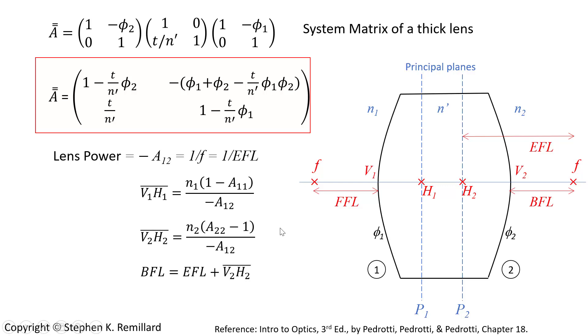Optical engineers like to use the back focal length, which is the physical distance between the back vertex and the paraxial focus of the lens, is the sum of effective focal length and this V2H2. Now you might say, how can it be the sum? Well, look at how this is written.